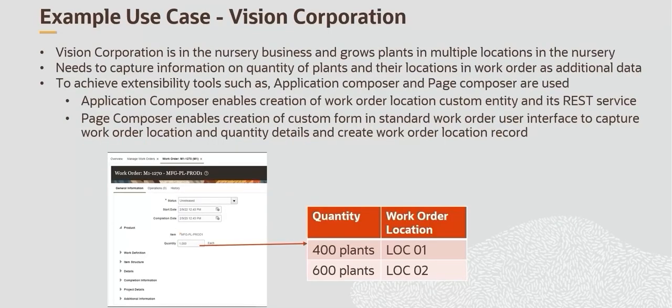Let us consider the use case of Vision Corporation. Vision Corporation is in the nursery business — they grow plants in multiple locations in nursery. They need to capture information of the quantity of plants and their locations in work order as child data. Because this functionality is not available as a standard feature, it can be implemented using Oracle SaaS extensions, that is, Application Composer and Page Composer.